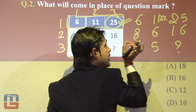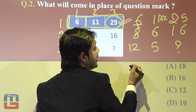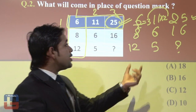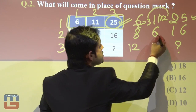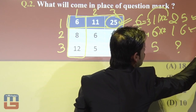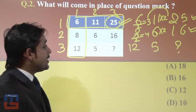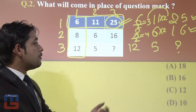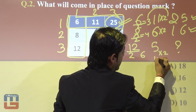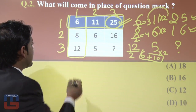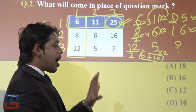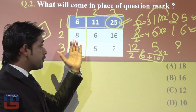New approach: multiply the middle number by 2 to get 22, then divide the first number by 2 to get 3, and add them: 22 + 3 = 25. Verifying on row 2: mid number 6 × 2 = 12, first number 8 ÷ 2 = 4, and 12 + 4 = 16 — correct. For the missing number: first number 12 ÷ 2 = 6, mid number 5 × 2 = 10, and 6 + 10 = 16. The answer is 16, which is option B.